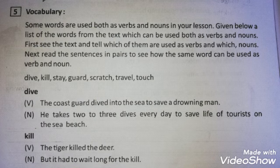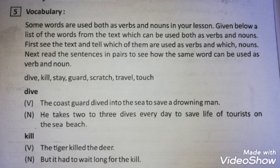Some words are used both as verbs and nouns. Given below is a list of words from the text which can be used both as verbs and nouns. First, see the text and tell which of them are used as verbs and which as nouns. Next, read the sentences in pairs to see how the same word can be used as a verb and a noun. Children, it is a task for you — open your textbook and see which words are used both as verbs and nouns.